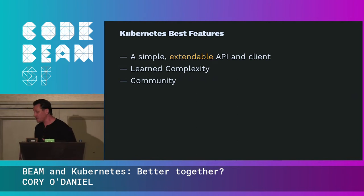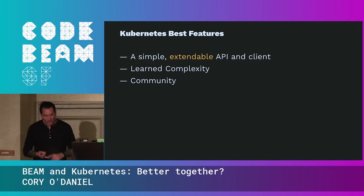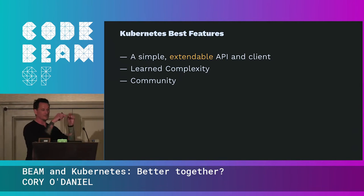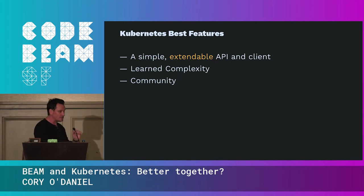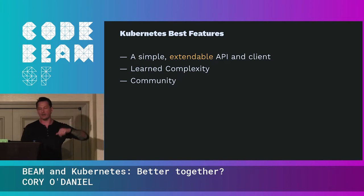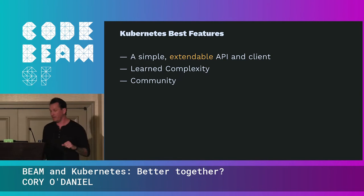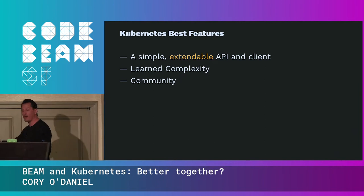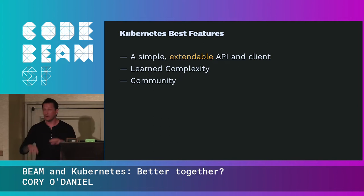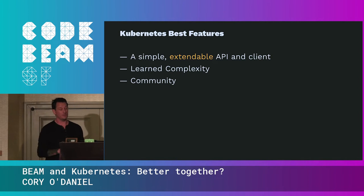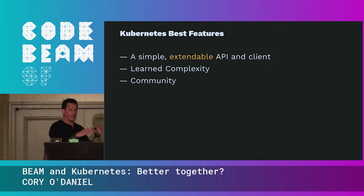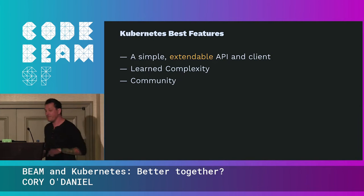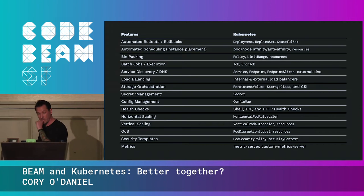Third is the community. Hundreds of companies this year alone have contributed to Kubernetes — the Googles, Microsofts, Amazons, Red Hat, VMware, Spotify, Tesla. There's a ton of people contributing back to Kubernetes. Those are my three favorite features of Kubernetes.